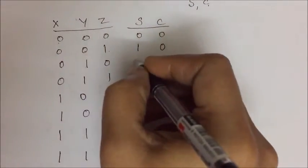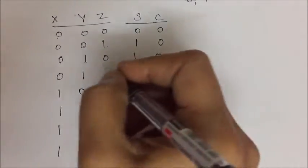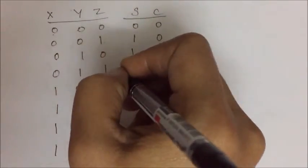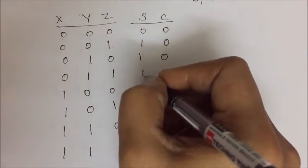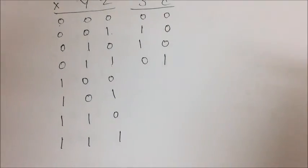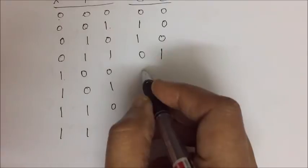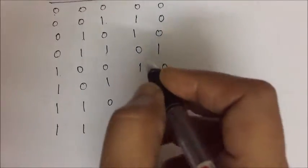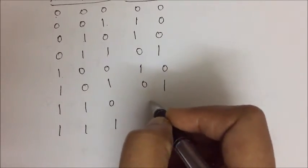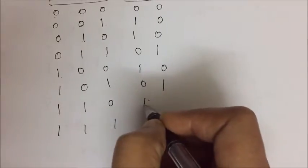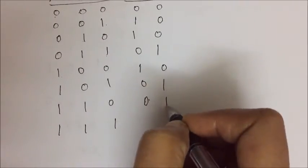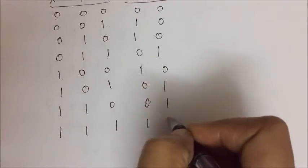So 0 plus 1 plus 0, again sum as 1, carry as 0. 0 plus 1 plus 1 equals 2. So sum will be 0 and carry will be 1. So here sum is 1, carry is 0, then 0, 1. Again 1, 0, then 1. 3 ones gives 1, 1.